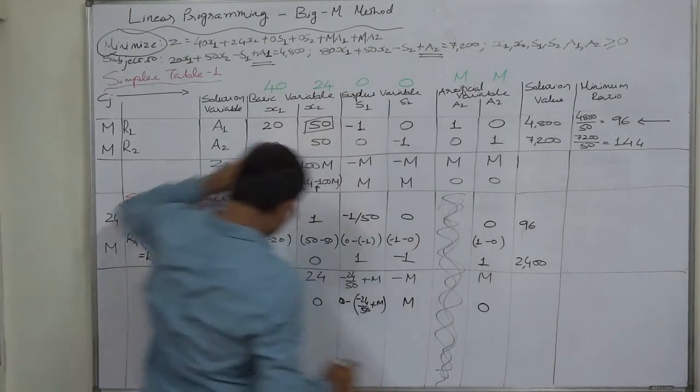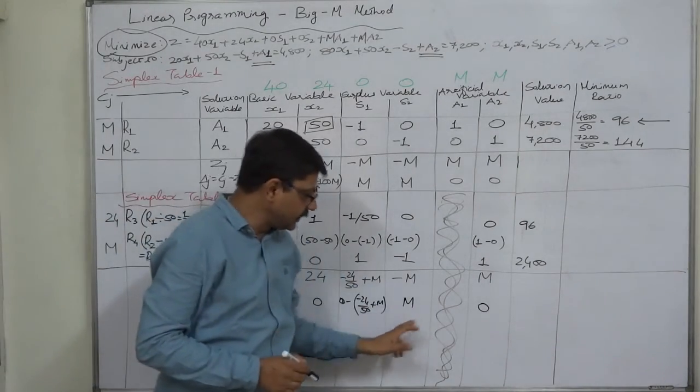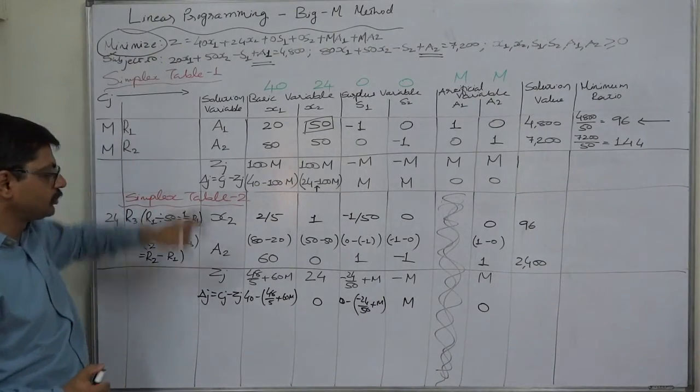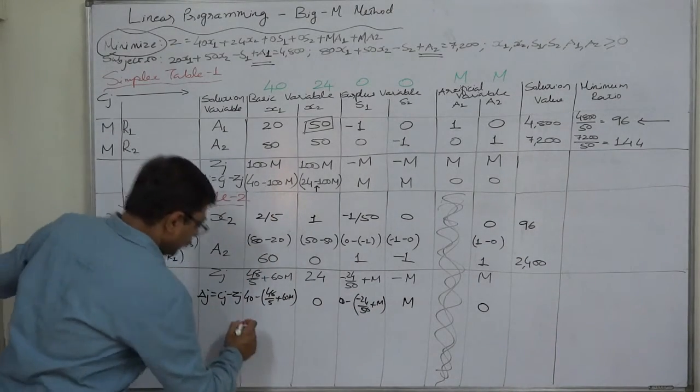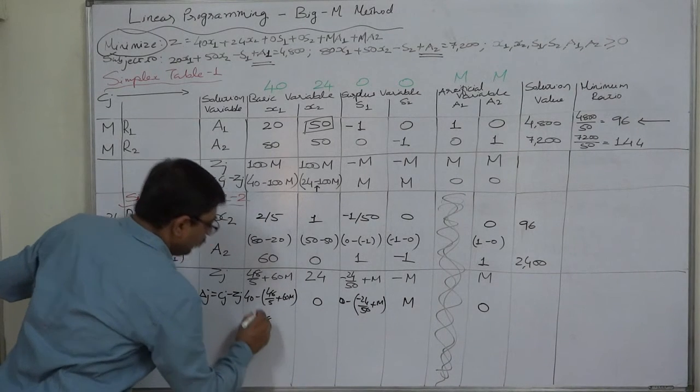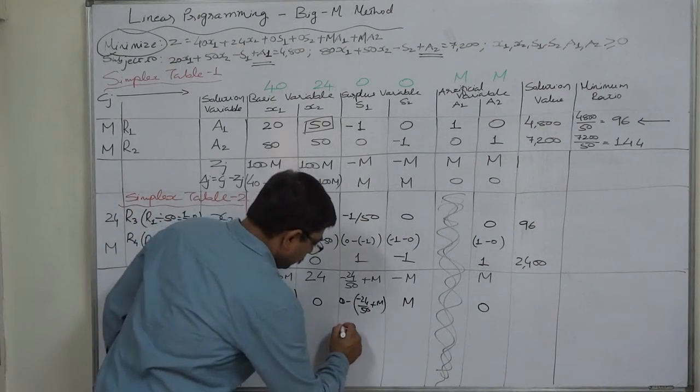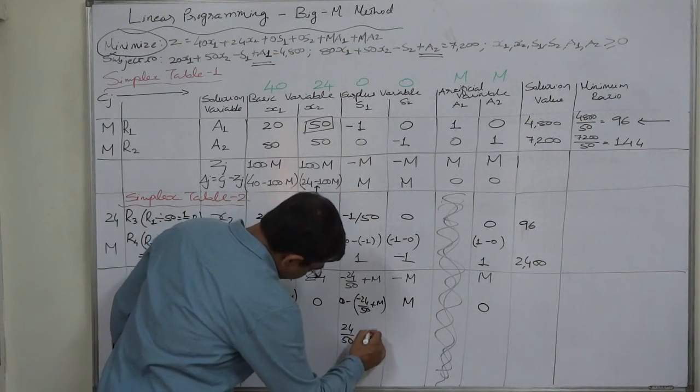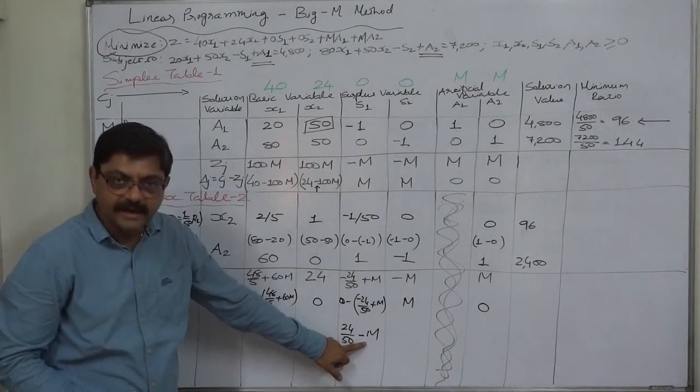We have to simplify these two for the purpose of comparison, because these three values are 0 or positive. But in case of minimization, to have the optimal solution, we should have all values 0 or negative. 40 minus 48/5 minus 60M. Here it will be positive 24/50, because minus into minus is positive, minus M. Here it is minus 60M, here it is only minus M.